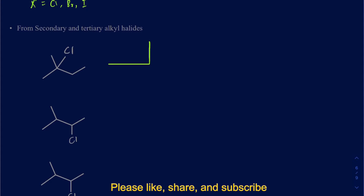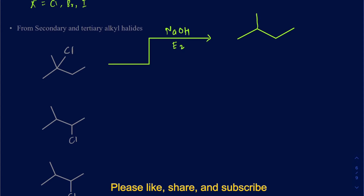For secondary and tertiary alkyl halides, if I go ahead and use NaOH, then this hydroxide being a strong nucleophile and a strong base — rather than doing an SN2 — it's actually going to do an E2, and you may end up getting a product that would be an alkene. Obviously, we're not really trying to make an alkene, but that would happen if you use a strong nucleophile and a strong base.